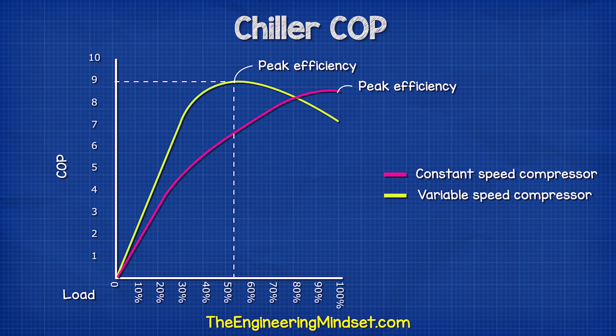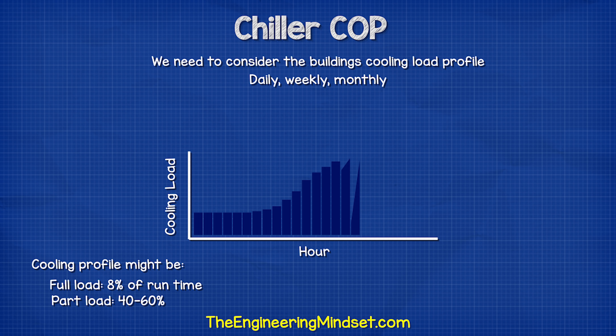In this example, we see that at around 50% load we get the highest COP of around 9. However, as the load increases in the peak of summer and we are approaching 90% load on the chiller, the COP becomes a lot lower at around 7, whereas the constant speed chiller will provide much more efficient and economical performance at this point. We need to consider the building's cooling load profile because typically it might only be at full load for perhaps 8% of the year and then spend 40% to 60% of the year at part load. So overall, the variable speed compressor would perform better, and in most scenarios this is true.